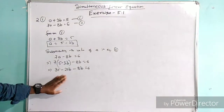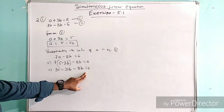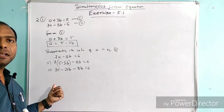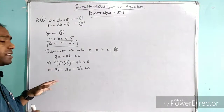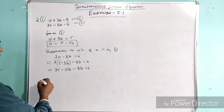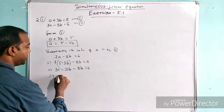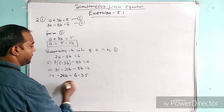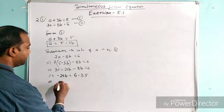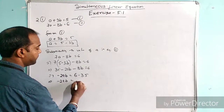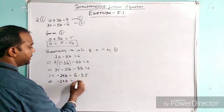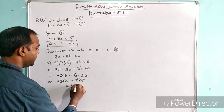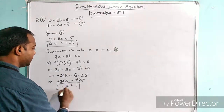We separate the b terms and constants. As we know, when moving a value from the left side to the right side of the equal sign, it changes sign — plus becomes minus. Combining the b terms: minus 21b minus 8b gives minus 29b. Moving 35 to the right gives 6 minus 35, which is minus 29. So minus 29b equals minus 29, and therefore b equals 1.